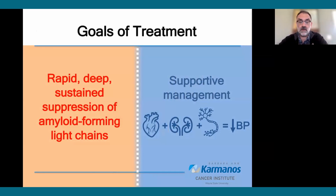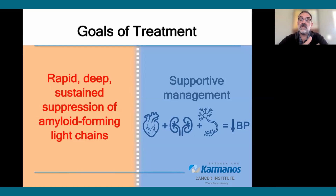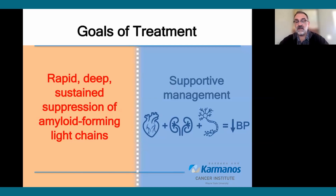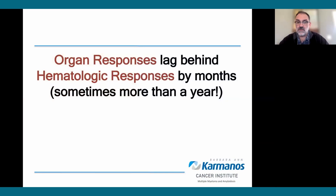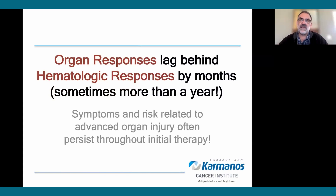You can usually reduce light chain production pretty quickly with treatment — usually within four to eight weeks you see a major reduction. The deeper the better; we aim for normalization of abnormal light chain levels and want that to be sustained so organs have a chance to bounce back. It's important to have a team in place to manage ongoing organ toxicity, because organ responses lag behind hematologic responses. A hematologic response is the light chain response, but organ responses can lag behind by months, sometimes by more than a year.